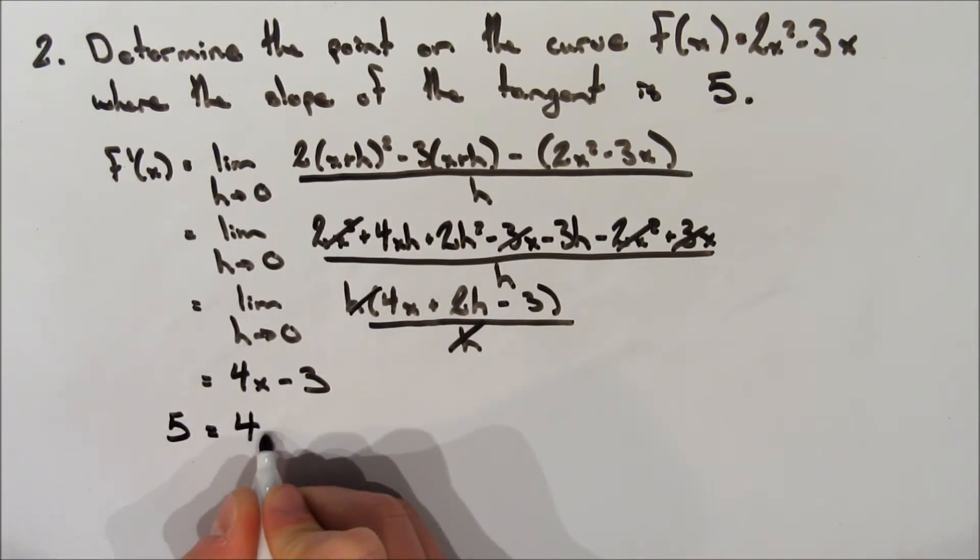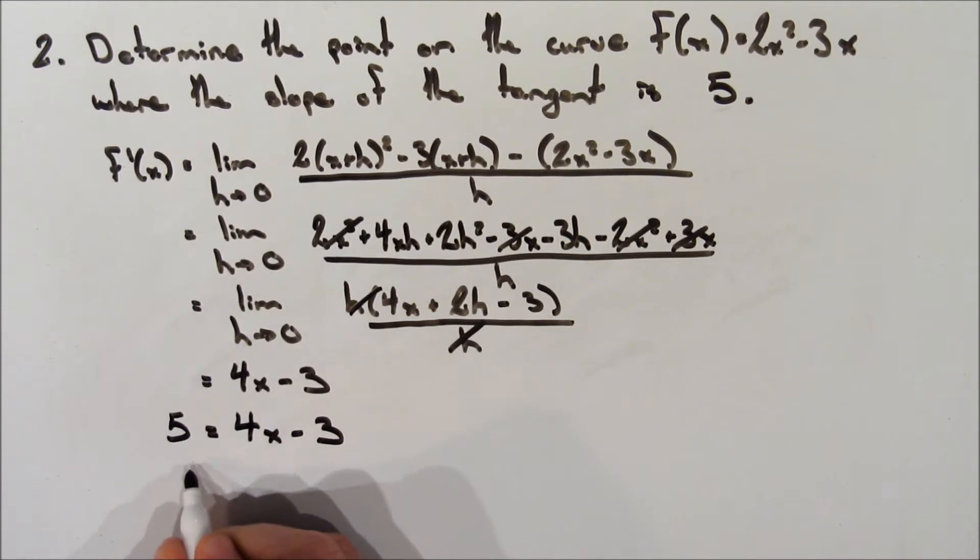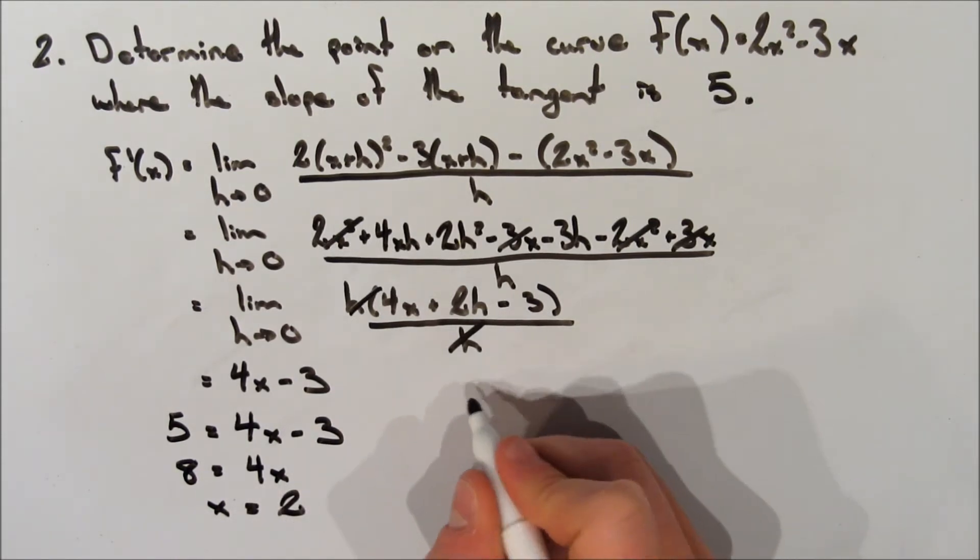Let's sub in the tangent that we know, so 5, and we're going to sub that in for f prime of x. So 5 is equal to 4x minus 3. Now we can move the 3 to the other side to get 8 equals 4x, and divide each side by 4. So we get that x is equal to 2.